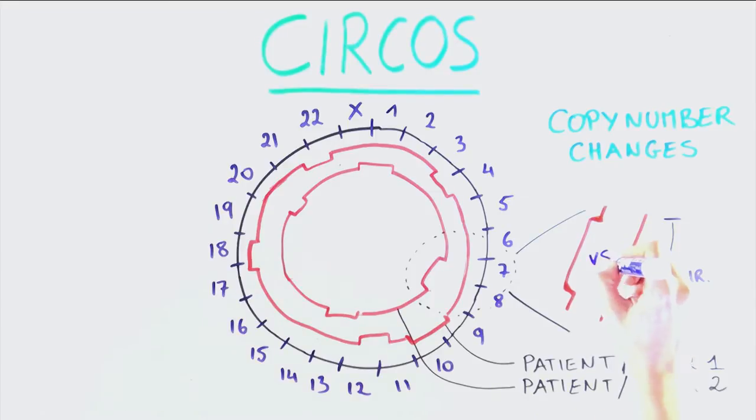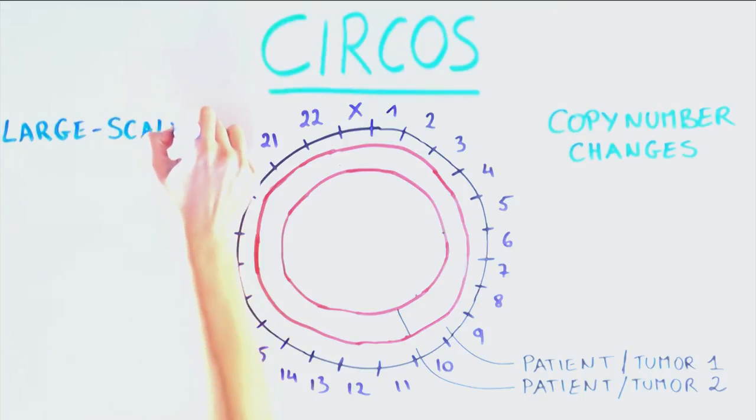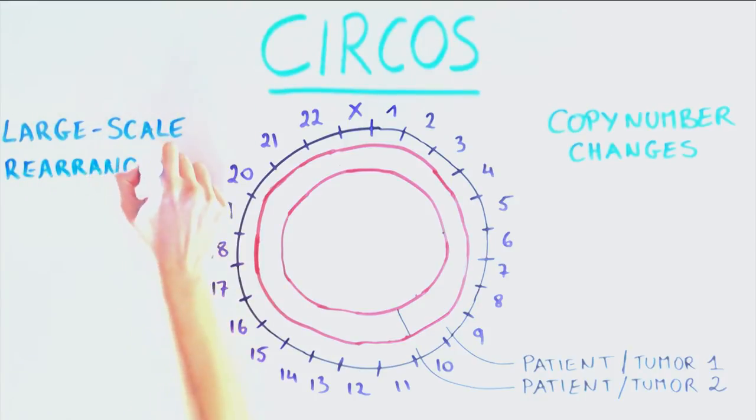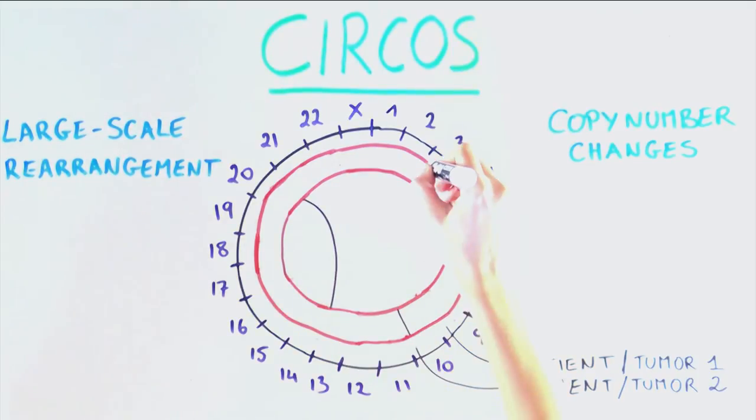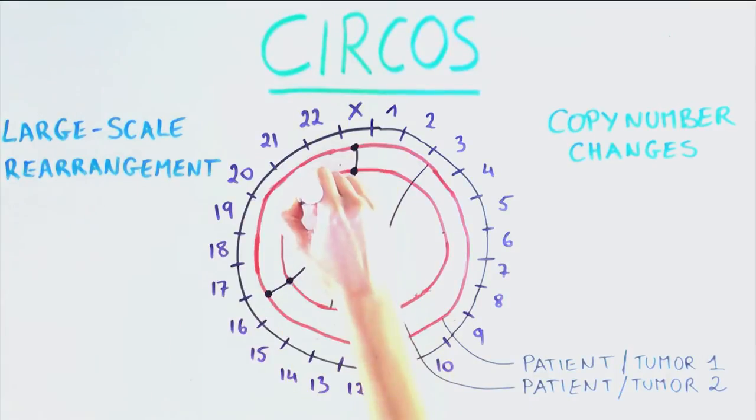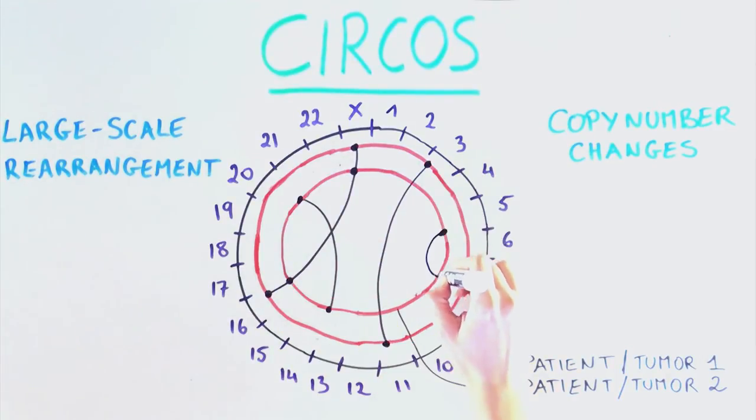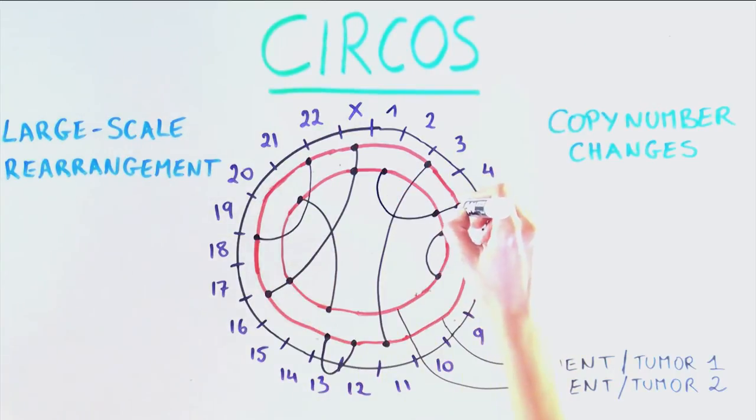We can also build upon this to include other types of genomic changes like translocations across the entire genome. To look at large-scale rearrangements using CIRCOS, lines going from one end of the rearrangement to another are drawn across the circle. If all tumors have these particular rearrangements, dots will be drawn in each line representing each sample.